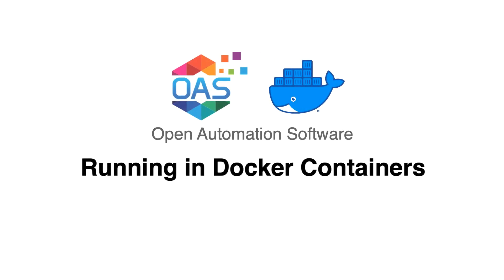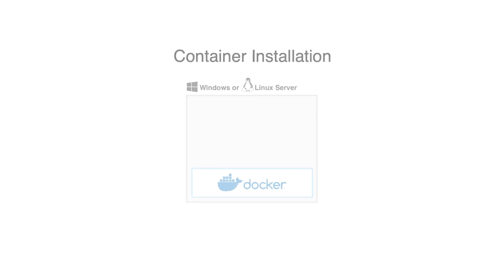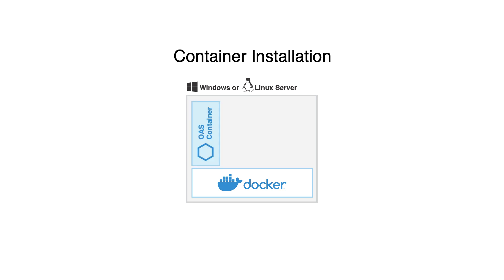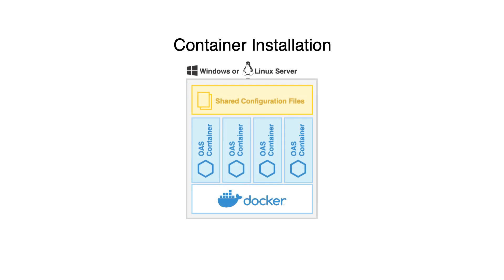In this video, we're going to review how you can run OAS within Docker containers. In a standard or standalone installation, the OAS server will run directly on the host operating system, just like any other application. But with Docker, the Docker engine itself runs on the host, and you can place one or more instances of the OAS server within containers. This provides quite a bit of flexibility and portability, so you can do things like mapping host directories so containers can share configuration files and other resources.